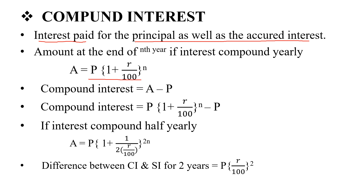Compound interest is equal to A minus P, which is P into 1 plus R by 100 raised to n, minus P. For half-yearly calculation, A is equal to P into 1 plus one-half into R by 100, the whole raised to 2n.